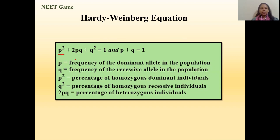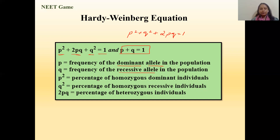The Hardy-Weinberg equation states that p² + 2pq + q² = 1, and p + q = 1. Here, p represents the frequency of the dominant allele in the population, and q represents the frequency of the recessive allele. p² represents the percentage of individuals that are homozygous dominant, q² represents the percentage of homozygous recessive individuals, and 2pq represents the percentage of heterozygous individuals in a population.